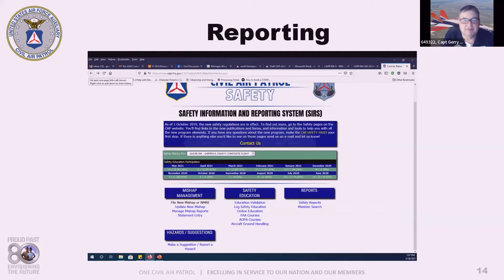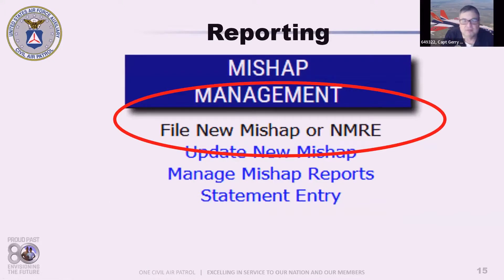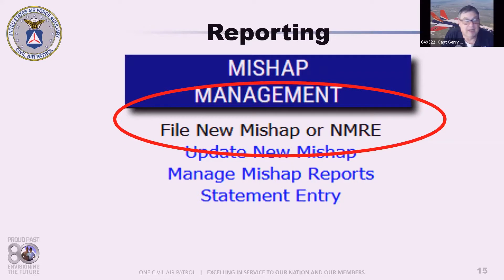Once you've made the call, you need to make a report. Your commander will make it his or her business to ensure you do this within 48 hours — they will hound you on it. In the system, click on the menu, go to Safety, and find Mishap Management. Click 'File New Mishap' or MMRE and follow the steps. Your unit commander has the responsibility to ensure this is done within 48 hours of a mishap occurrence.